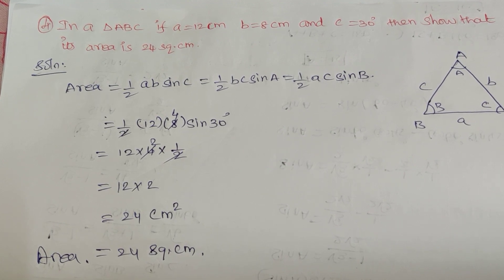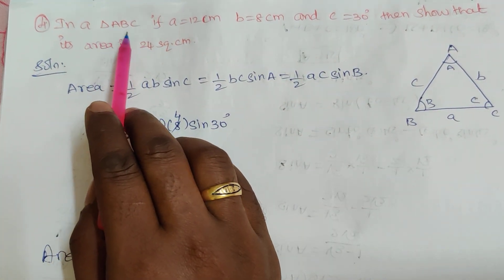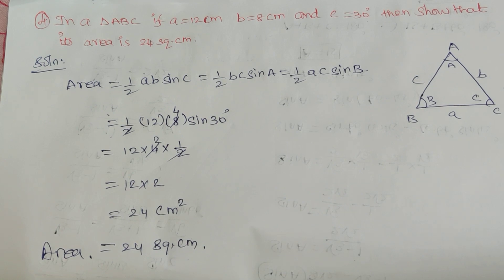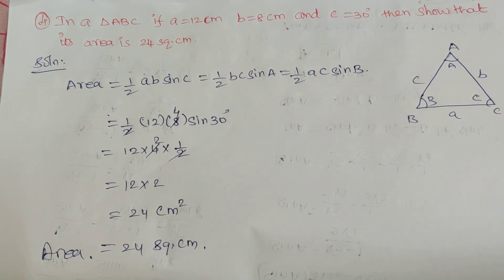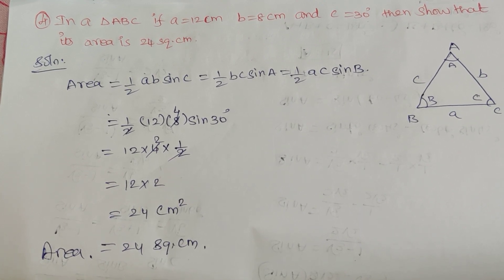Hi children, now we are going to see question number 4. In a triangle ABC, if A equals 12 cm, B is equal to 8 cm, and C is equal to 30 degrees, then show that its area is 24 square cm.